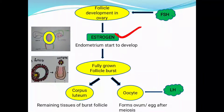Estrogen starts the development of the endometrium in the uterus. So follicle development is happening in the ovary while endometrium development starts in the uterus — both under the effect of estrogen. Hormones regulate the process: if present in required quantity the process continues, but if absent or insufficient the process disturbs or stops.